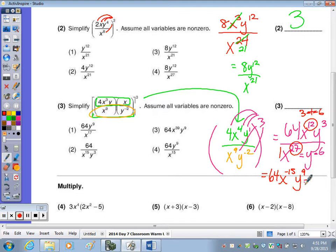so that becomes y to the ninth. Negative exponent, we make a fraction, the x to the negative fifteenth moves to the denominator, and everything else stays up top. So sixty-four y to the ninth over x to the fifteenth is choice four.